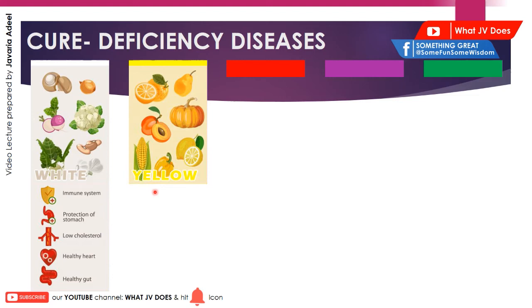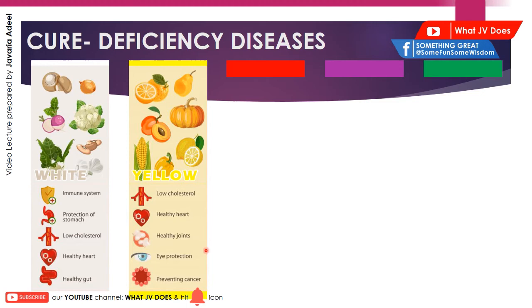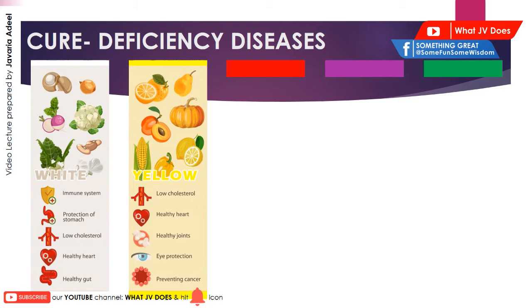Moving on towards the yellow category, that includes corns, lemons, capsicum, and orange. The orange vegetables and fruits are also included in this yellow category. They are good for low cholesterol, healthy heart, healthy joints, eye protection, and prevention of cancer.